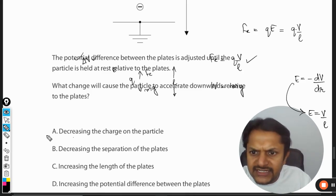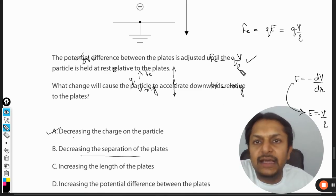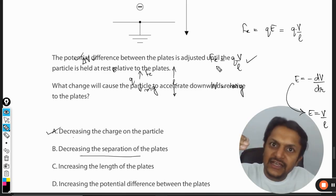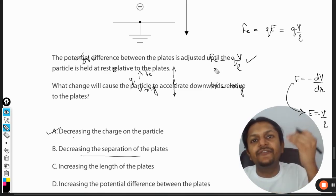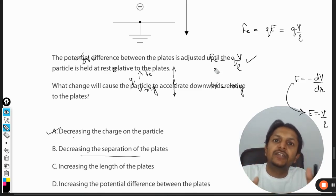B - decreasing the separation of the plates. If you are decreasing the separation between the plates, L is decreased, which means F_e is going to increase. The upward force is going to increase, it will become more than weight, so particle will start moving up. So this is not the correct answer for us.